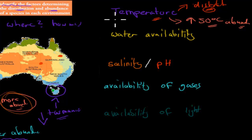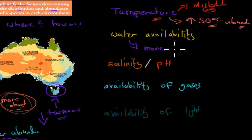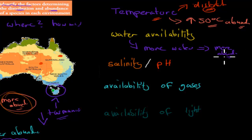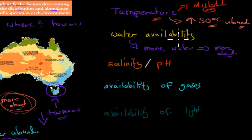Availability of water works the same way. More water means more abundance because all living things need water. If you're living in a desert you must be very adapted to it, so you'd only find the distribution of desert animals, or animals that can survive low water levels, in an area like a desert. Animals that can survive very high water levels would be found in rainforests.